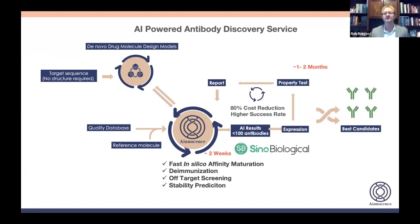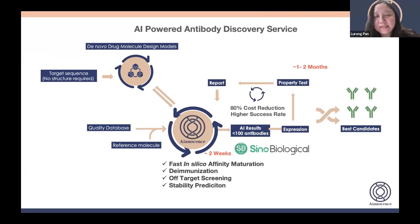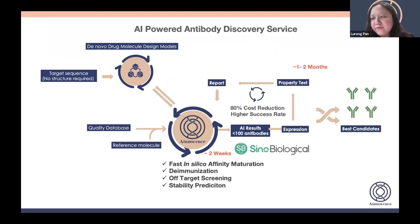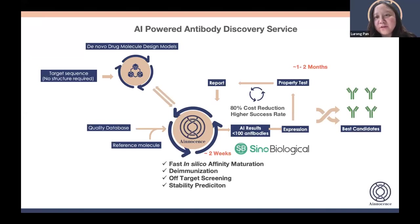Ryan's second question: are these antibody sequences fully synthetic via generative models or are they matured from existing repertoires? For the framework region, they are from existing repertoires. For the CDR regions, they are generated synthetically. But we have certain features to make sure that even though they are artificially simulated, they can still be expressed - that's why expression was successful. You have to counter the fact that some AI-generated sequences might not pass through expression systems.